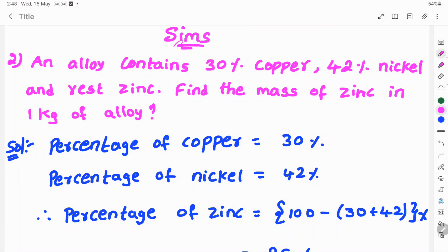Hi, welcome to Sims. Today's sum: An alloy contains 30% copper, 42% nickel and rest zinc. Find the mass of zinc in 1 kg of alloy.